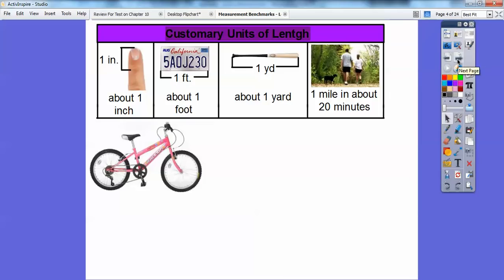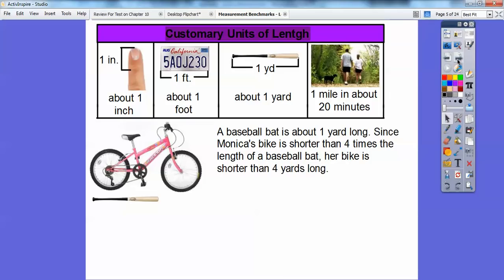Just think about if you had a bike, and if you had a baseball bat, or maybe your brother had a baseball bat, so a baseball bat would lie down about right there, and it's about a yard long. Since Monica's bike is shorter than four of those baseball bats, and the length of the four baseball bats, her bike is going to be shorter than the four yards right there. Here's one baseball bat right here, and it goes over half the length right there. In fact, it looks like about one and a half baseball bats. So Monica's statement, is it reasonable, or is it not reasonable? It is not reasonable.